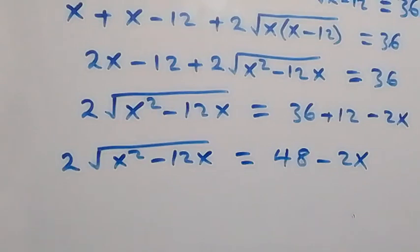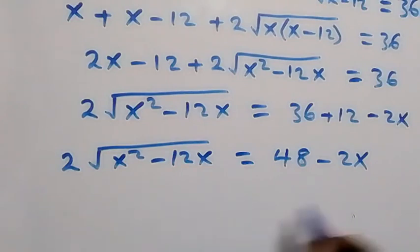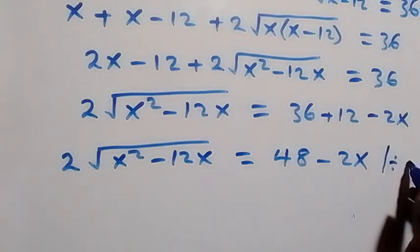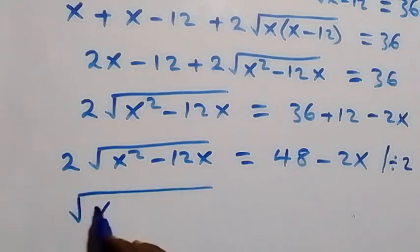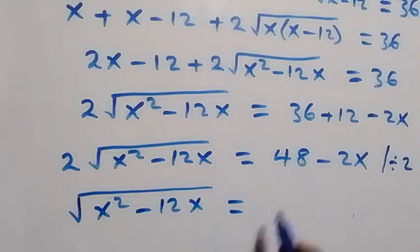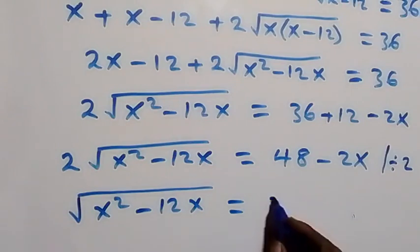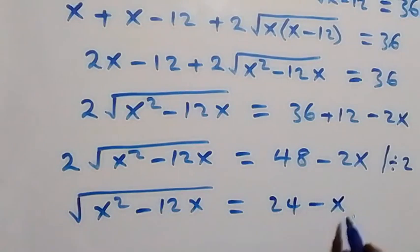We can divide both sides by 2. The 2 cancels out, leaving us with square root of (x squared minus 12x) equals 24 minus x.